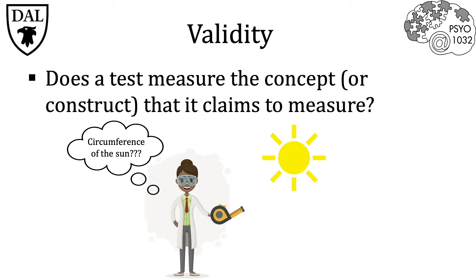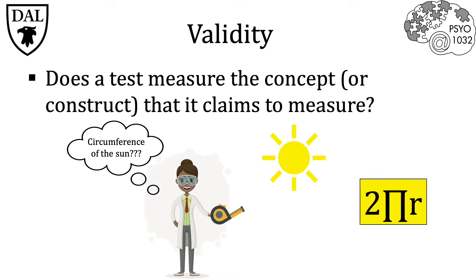For example, is holding a measuring tape to the sky a valid way to measure the circumference of the sun? As we all should know, this is not a valid way to measure the sun. The results from this method of measurement would be completely unrepresentative of the true circumference of the sun, and we know that there are much more valid ways to do this measurement, like using the proper mathematical formula.